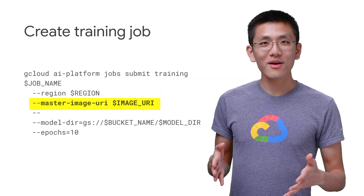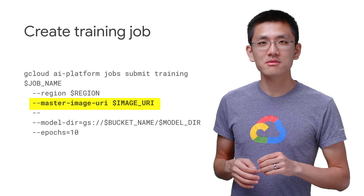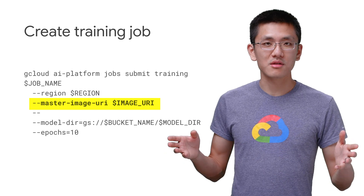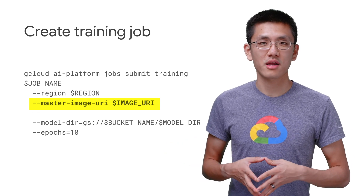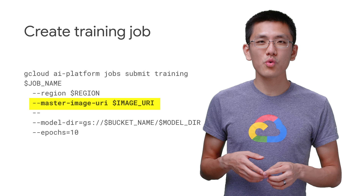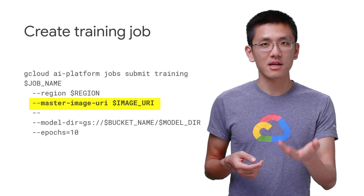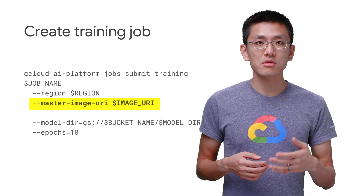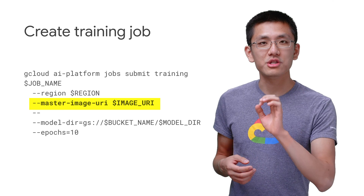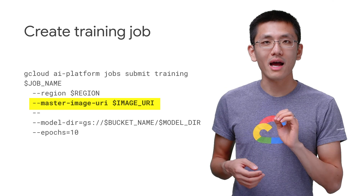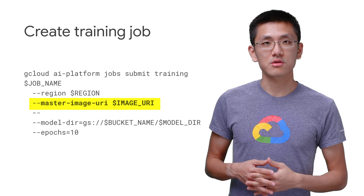Once you have your image uploaded to GCR, creating a job is quite similar to normal usage of AI Platform training. There's just one extra command line argument when you submit that training job: you want to make sure you include --master-image-uri and pass in that GCR URI.